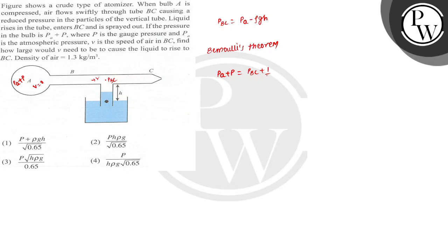plus 1 upon 2 rho V square. So PA plus P equal to, in place of PBC we can write PA minus rho GH plus 1 upon 2 rho V square.